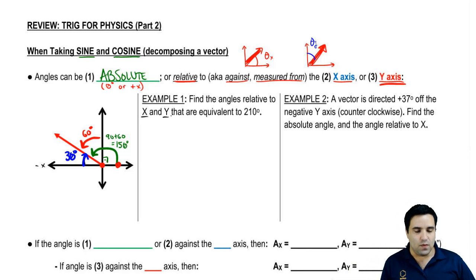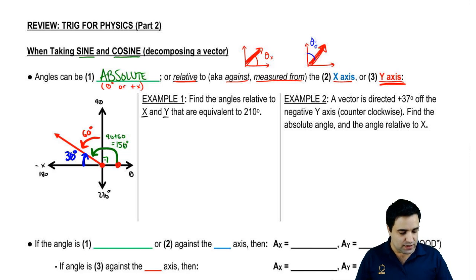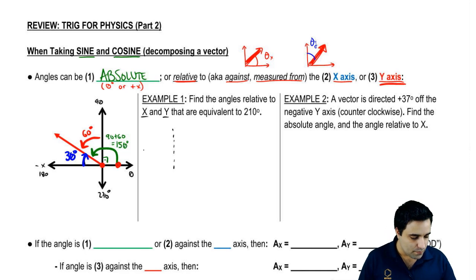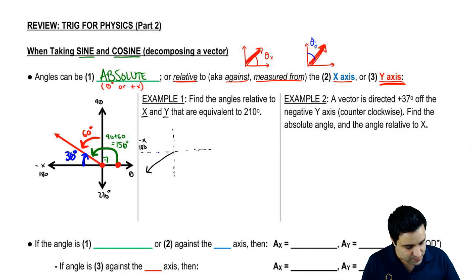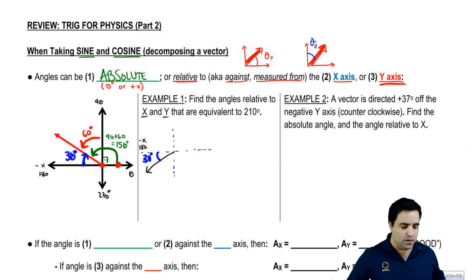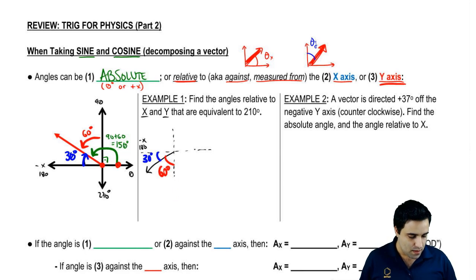So here let's find the angles relative to x and y that are equivalent to 210 degrees. Remember: 0, 90, 180, 270 degrees. So 210 is somewhere down here — it's 30 more than 180. This is 180 right here, the negative x-axis. So 210 is simply 30 more than that. That 30 degrees is my angle with the x-axis, the angle relative to the x-axis. The angle against the closest y-axis is going to be 60. And the absolute angle starts from here and goes all the way around, so it's 180 plus 30, which is 210.